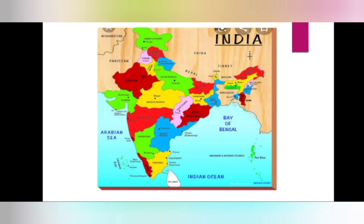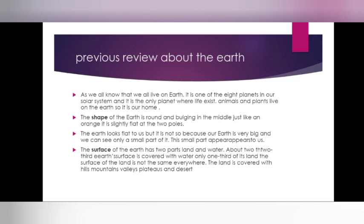Before explaining what a globe and a map is, I want to review something about Earth that you already have studied. So I want to review Earth. You all know that we all live on the Earth. It is one of the eight planets in our solar system and it is the only planet where life exists. So it is our home — the possibility of life only exists on the Earth.